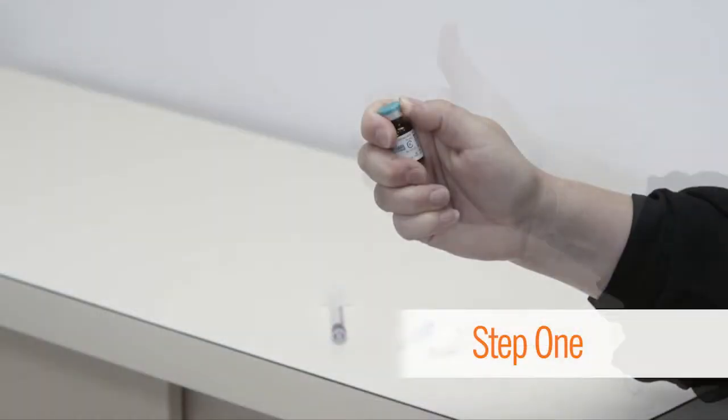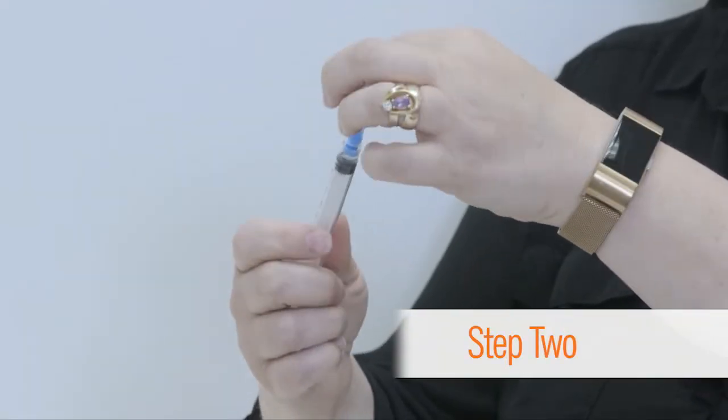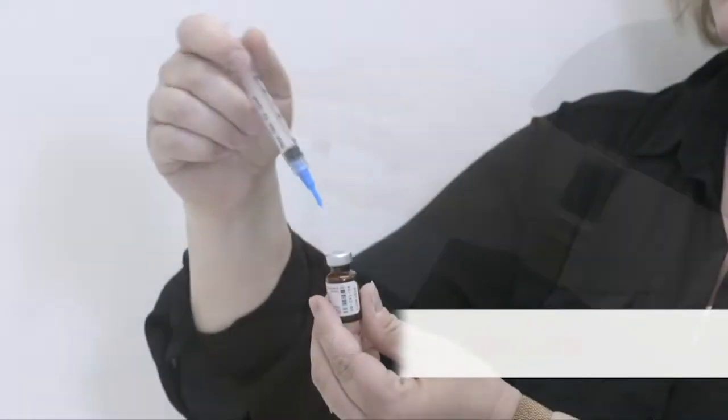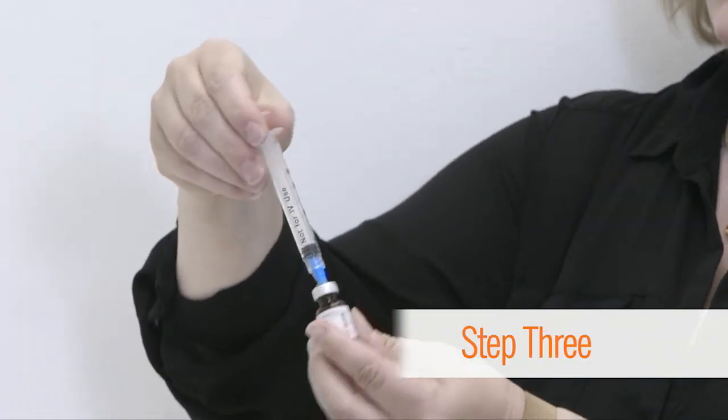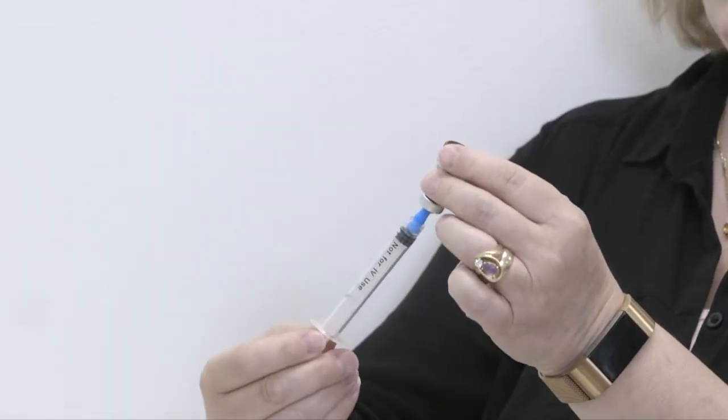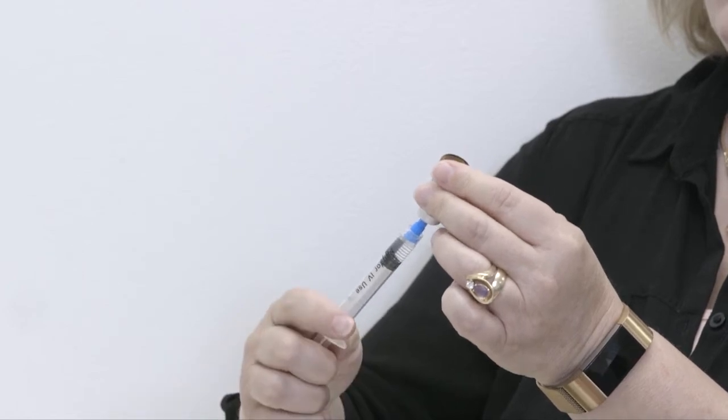Take the cap off the medication vial. Place a blunt tip needle on the syringe. Insert the needle into the medication vial and turn it upside down. Pull back on the syringe and get all of the medication out of the vial and into the syringe.